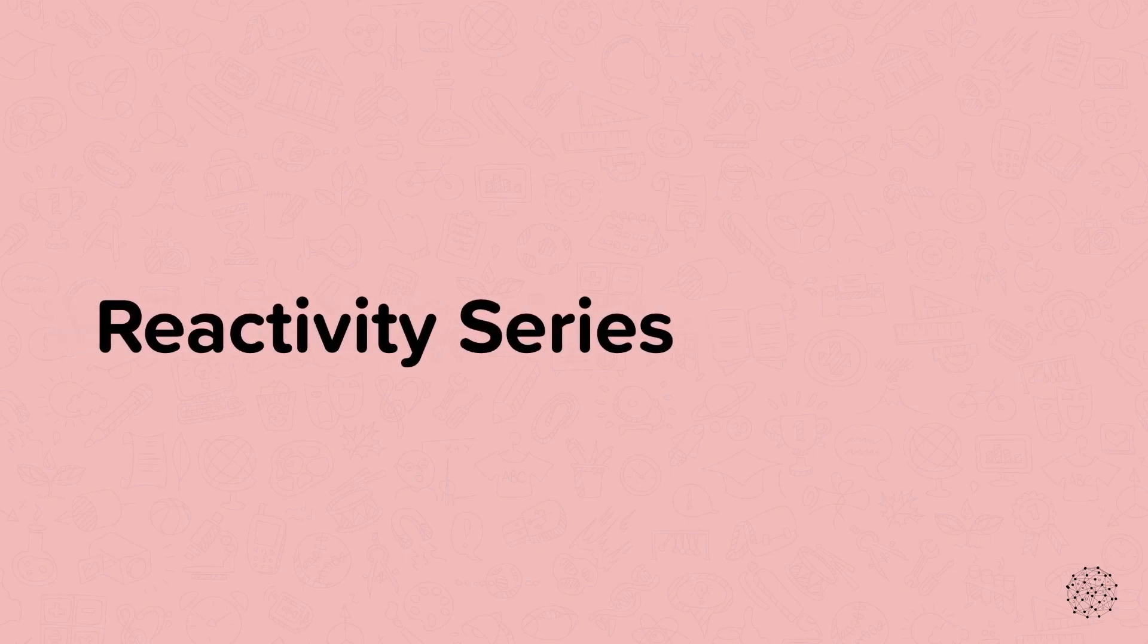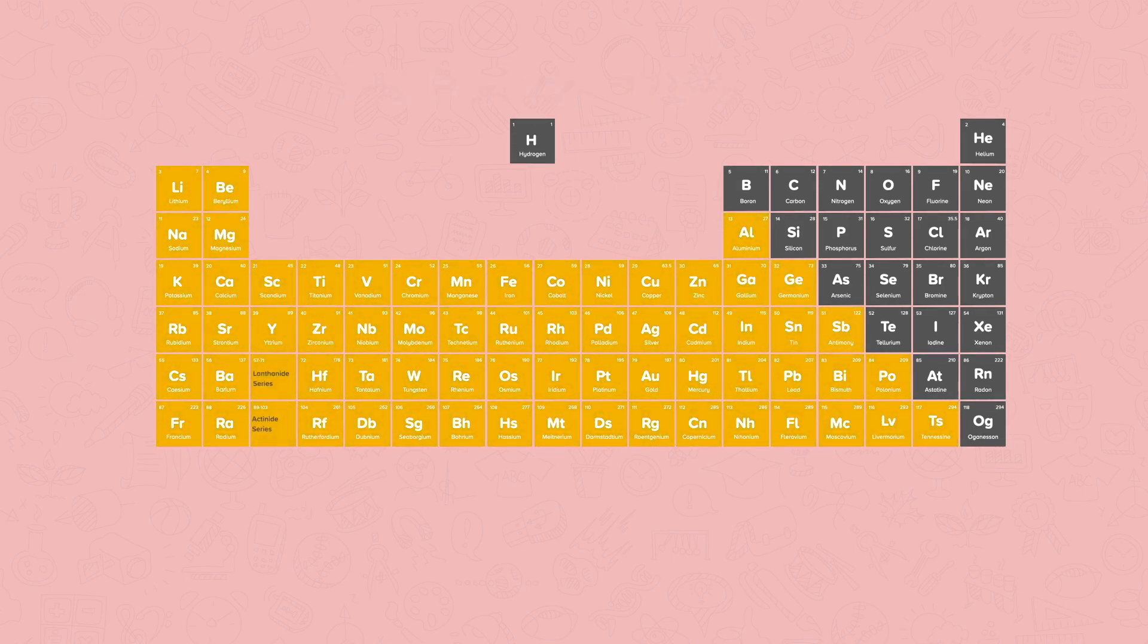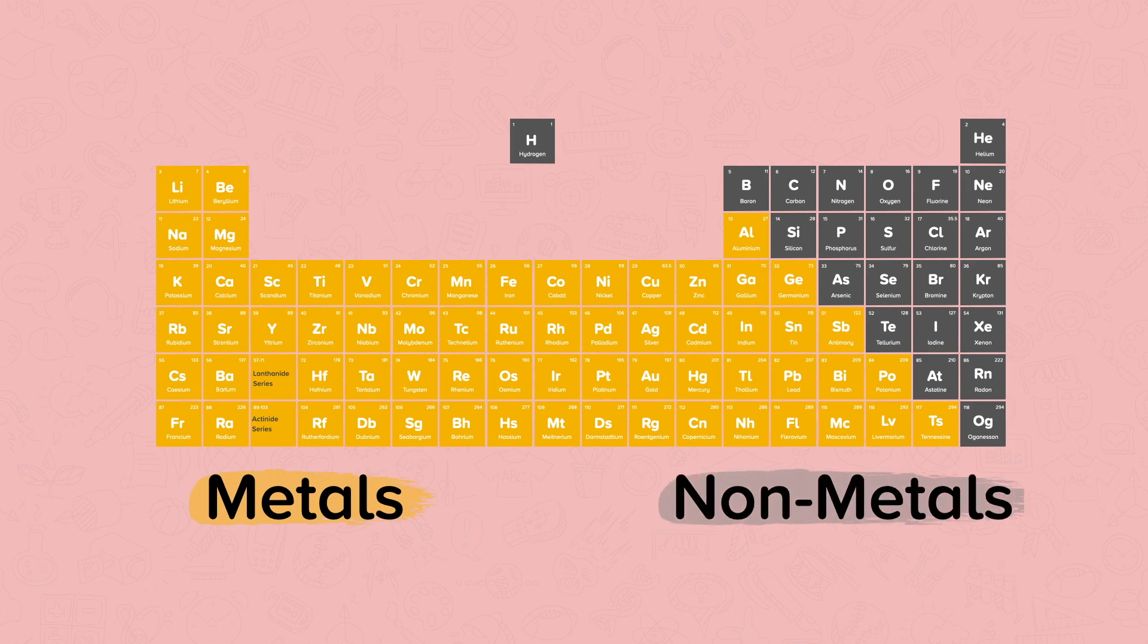In this nugget, we are going to learn about the reactivity series. The majority of elements found in the periodic table are metals. Metals are found to the left and towards the bottom of the periodic table, highlighted here in yellow. Non-metals are found towards the right and top of the periodic table, highlighted here in grey.